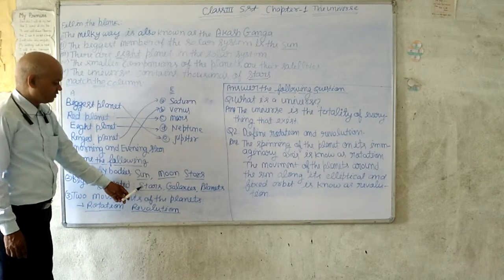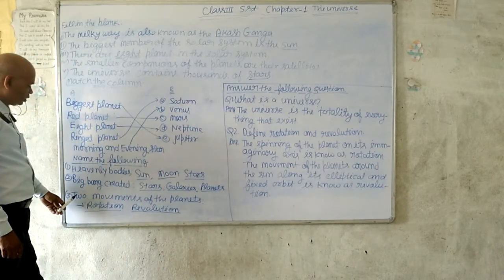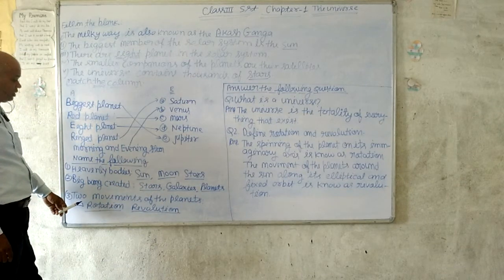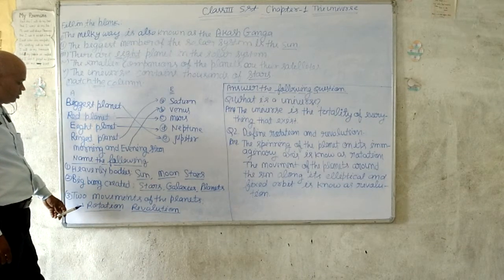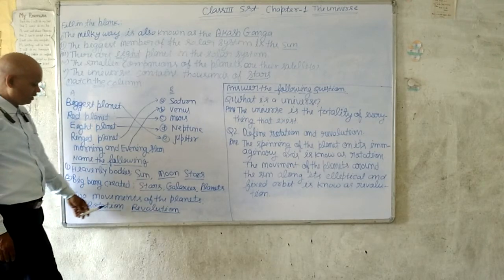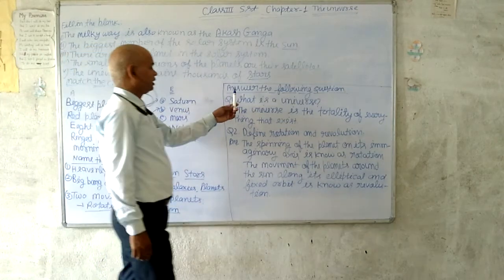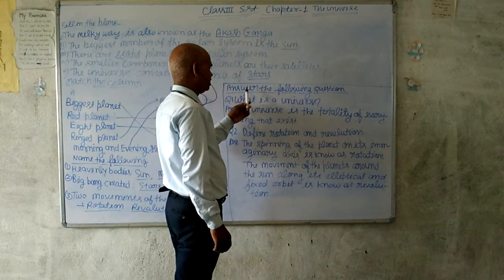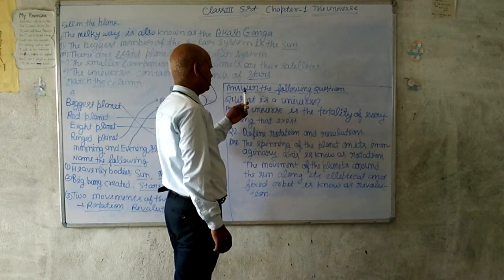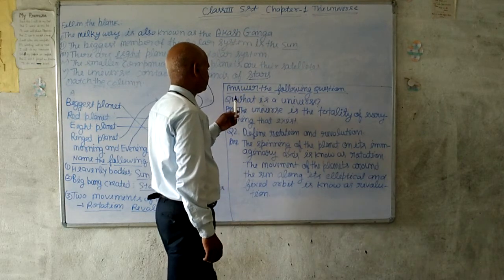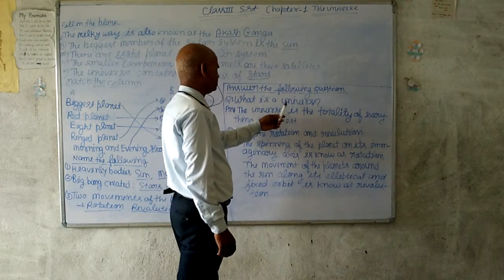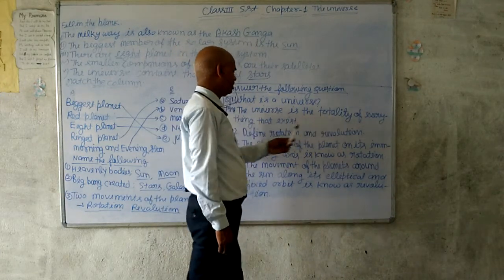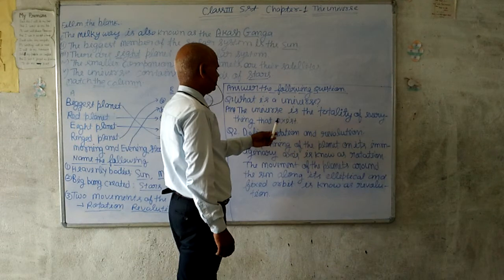Stars, galaxies, and the movement of planets — now I am going to teach you the question and answer section. What is a universe? The universe is the totality of everything that exists.